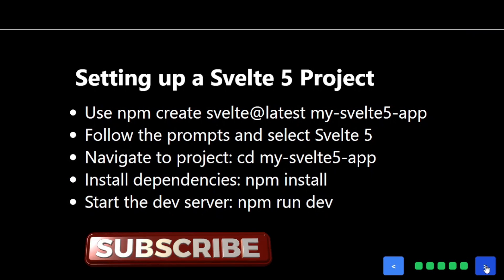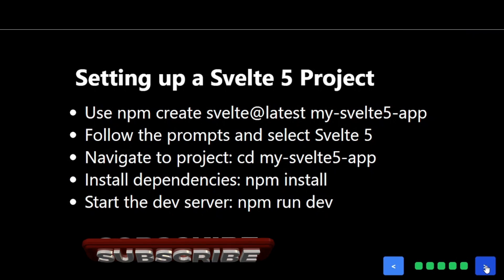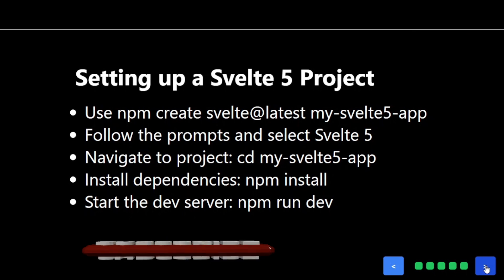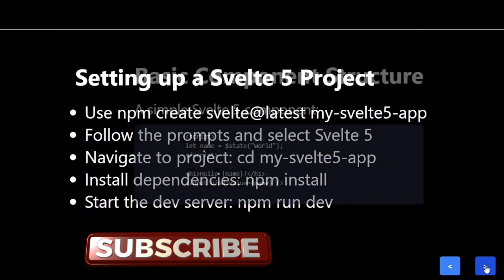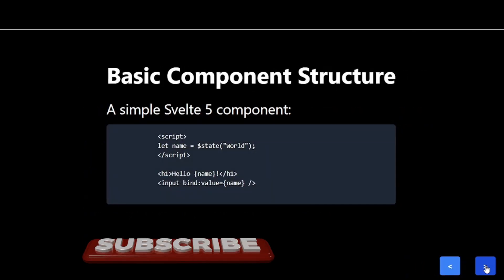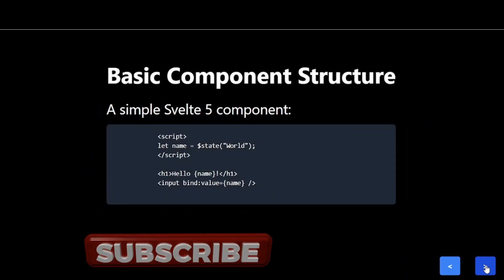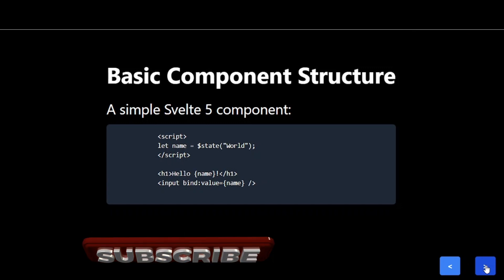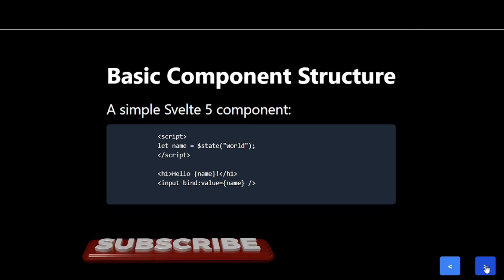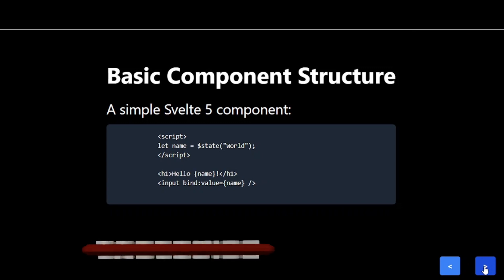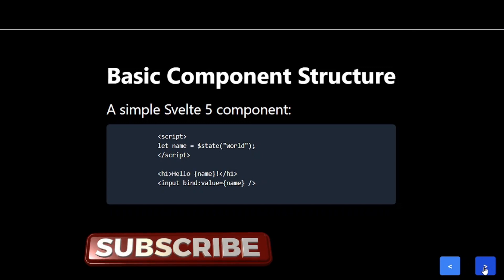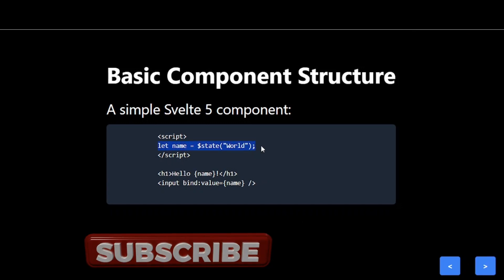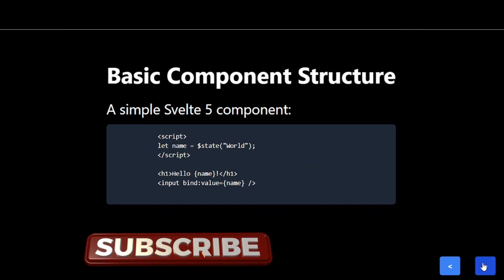Now let's look at the basic structure of a Svelte 5 component. Here's a simple example. Notice the dollar state rune? This is how we declare reactive variables in Svelte 5. When the value of name changes, Svelte automatically updates the DOM. It's that simple.